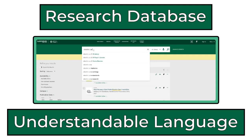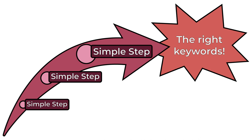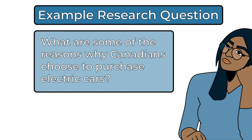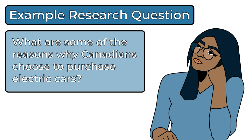For example, if you are using a research database to search for information, your search will be more effective if you are using language in a way that the database understands. This sounds complicated, but it basically just takes a few simple steps. The first thing you want to do is look at your research question and identify the main ideas it contains. Then you want to pick out keywords that express these main ideas. Electric car, purchase, and Canada are the main ideas you want to learn about for this question, so these are a good starting point.